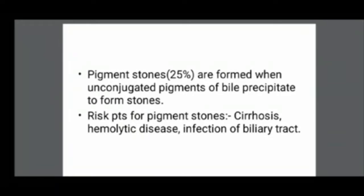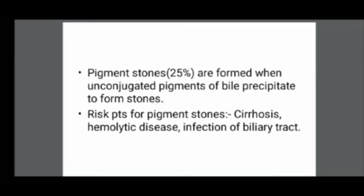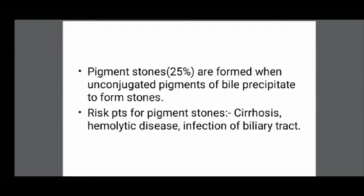How are pigment stones formed? Pigment stones are formed when there is excessive unconjugated bilirubin. In any type of liver disease, there will be excess bilirubin. Also, in certain hemolytic diseases where RBC destruction is very high, there is a lot of production of bilirubin. These unconjugated bile pigments become supersaturated and pigment stones are formed. So in any liver disease, pigment stones are formed.